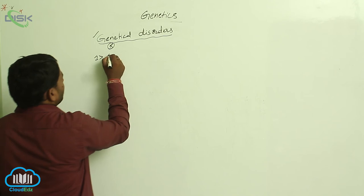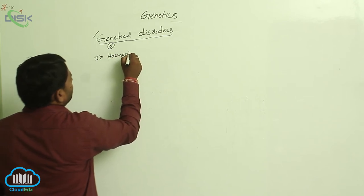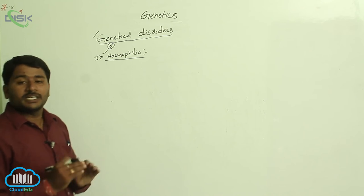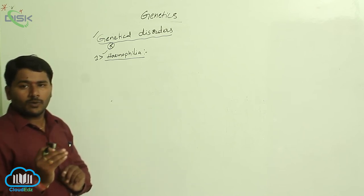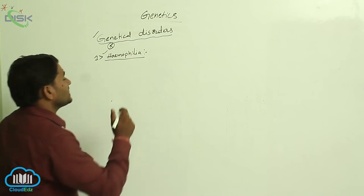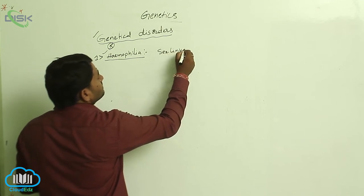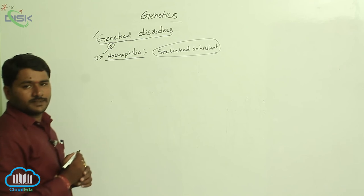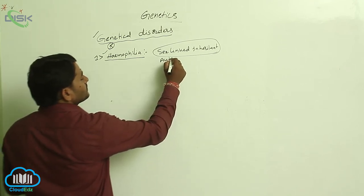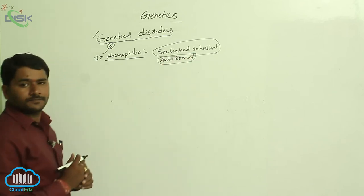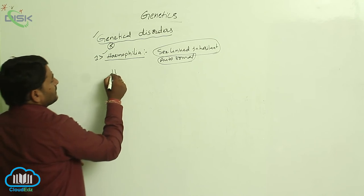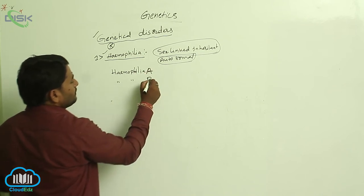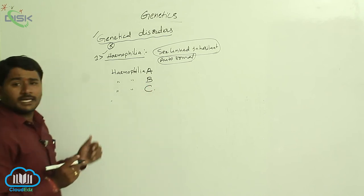The first disorder is hemophilia. It is a monogenic disorder and a sex-linked inherited disorder, as well as an autosomal disorder. There are three types of hemophilia: hemophilia A, hemophilia B, and hemophilia C.